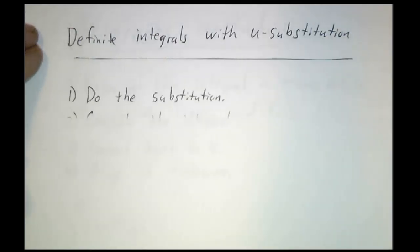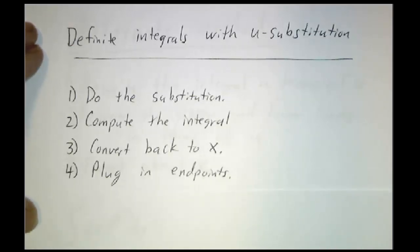So the first approach is straightforward. You just do everything exactly as before. You find a u and you do your substitution. You compute your integral as if you were doing an indefinite integral. You write everything in terms of x and then when you finally have your antiderivative, then you plug in your endpoints.